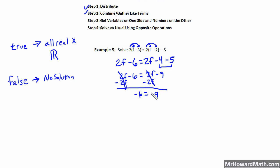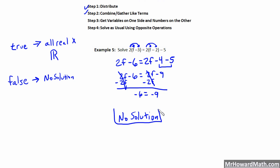Our variable is gone, so we evaluate the remaining statement. Is negative 6 equal to negative 9? Absolutely not — it's false. Therefore our answer is no solution. That means there is no number, fraction, or decimal — nothing — that we could plug in for f to make the left expression equal the right expression. There is absolutely nothing we could substitute for f to make this true.